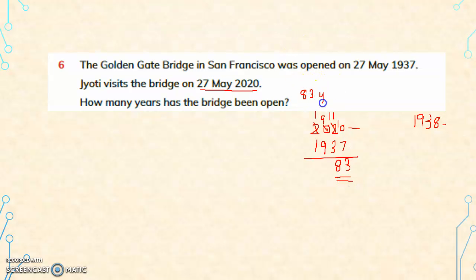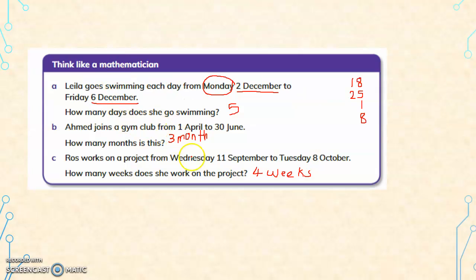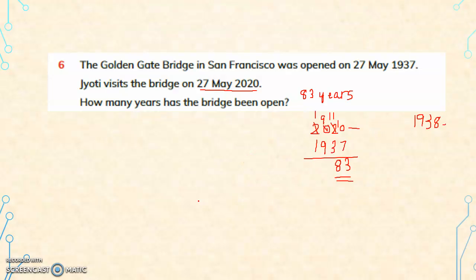The bridge has been opened for 83 years. For years, you take the later year minus the earlier year to find the difference. For months, weeks, and days in the difference, the calendar helps us find these easily. That is about time intervals.